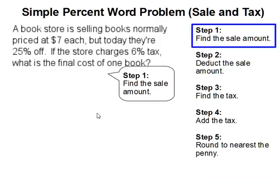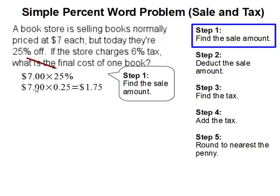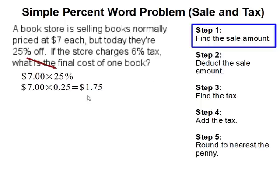Step one: find the sale amount. The sale amount is 25% off. So what you do is take $7 and multiply that by 0.25, converting the percent to a decimal. That gets you $1.75.